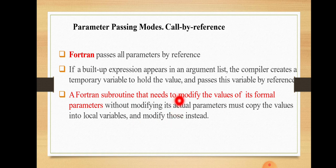In Fortran, the default parameter passing mechanism is call by reference. A Fortran subroutine that needs to modify the value of its formal parameter without modifying its actual parameter must copy the value into a local variable and modify that instead. In call by reference, if the formal parameter is modified, it gets reflected in the actual parameter also, because both of them are pointing to the same location.